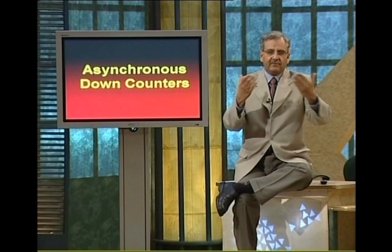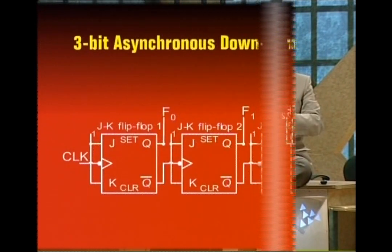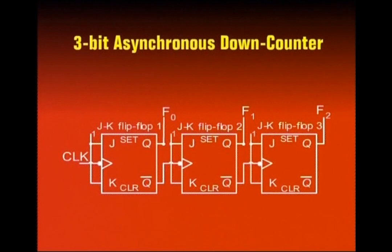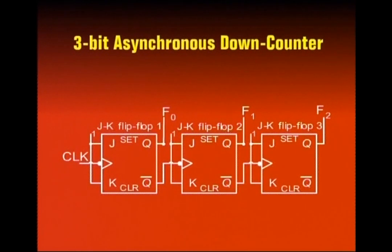Let's look at the asynchronous down counter — its circuit and how it works. The diagram shows a 3-bit asynchronous down counter. Three flip-flops are connected together. The first flip-flop has its J-K inputs connected to logic 1. Similarly, the second and third flip-flops also have their J-K inputs permanently connected to 1. The clock signal is applied directly to the first flip-flop. Its Q-bar output is connected to the clock input of the second flip-flop. Similarly, the second flip-flop's Q-bar output is connected to the clock input of the third flip-flop. The first flip-flop represents the least significant bit F0, the second represents F1, and the third represents the most significant bit F2.